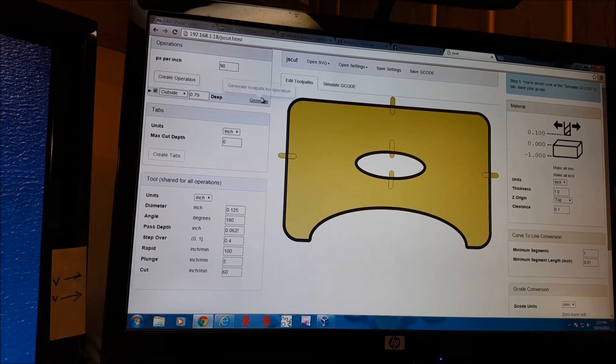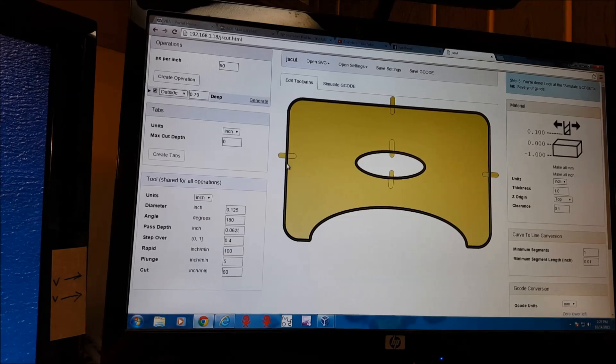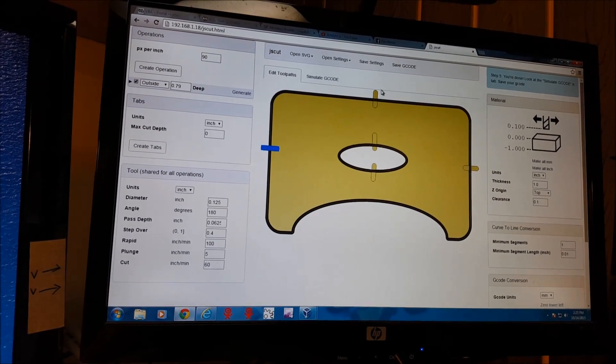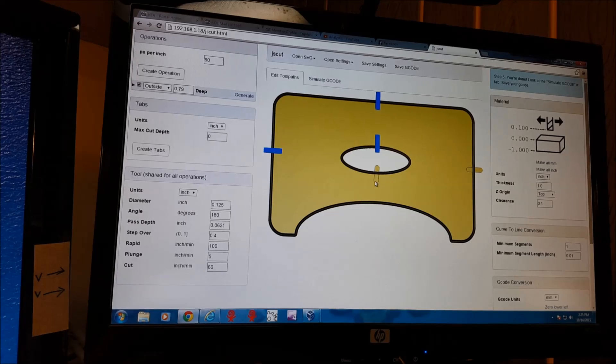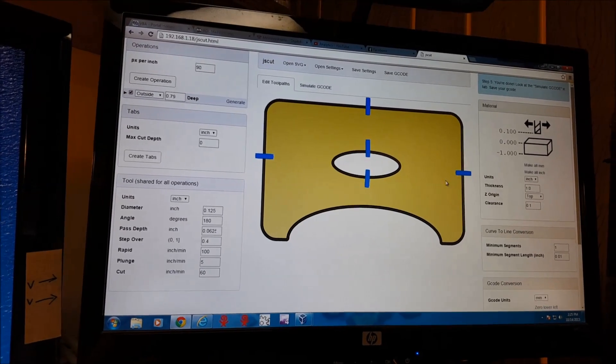We go to generate. And after we hit generate, you can see the line through here. And these are our tabs. Tabs are really important. So your stuff doesn't go flying everywhere.